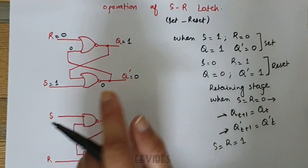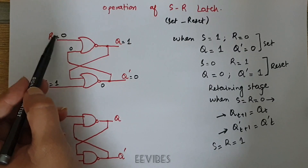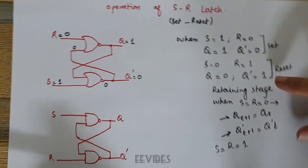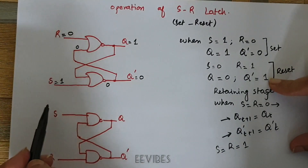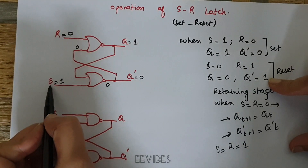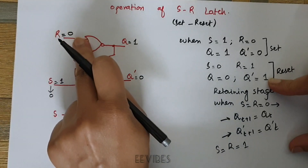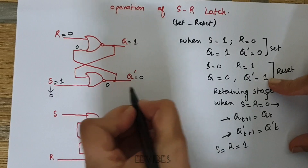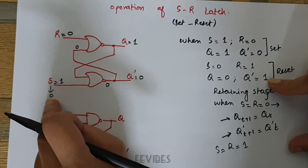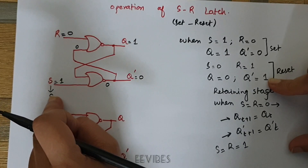Since we cannot directly make R equal to 1 — because that would create the forbidden state — before making R equal to 1 we first have to switch S equal to 0. So in this scenario R is again equal to 0 and S is being switched to 0. Let's see what happens when you make S equal to 0.